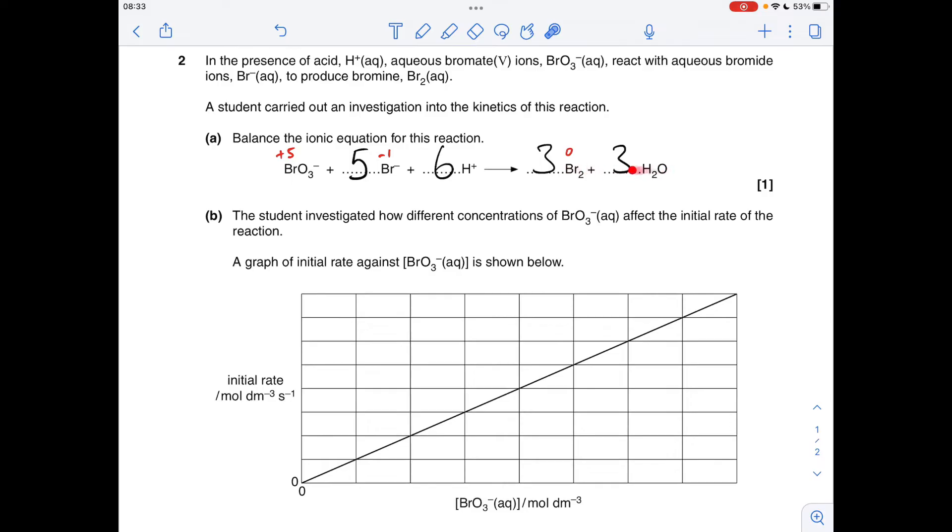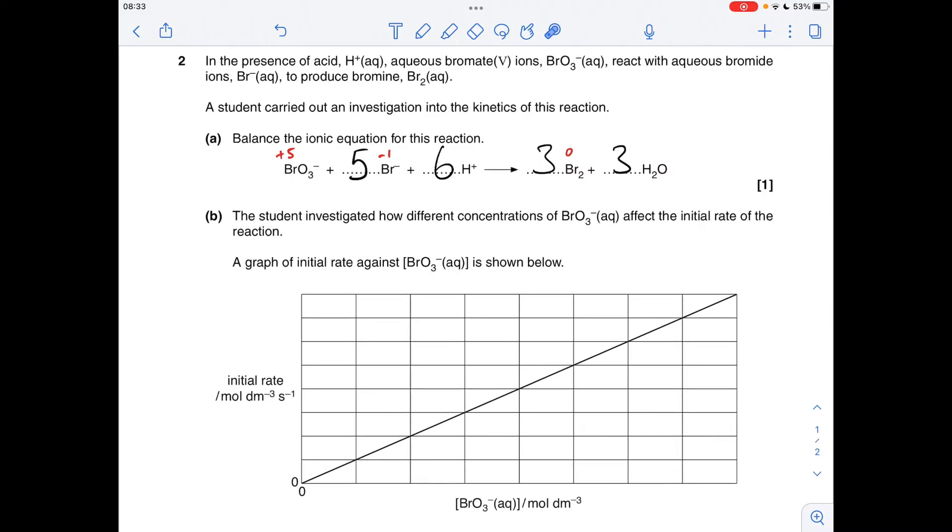So moving on to part B, we've obviously got to use all the data to get the orders of reaction for the three reactants, and then we've got to use that to work out the rate equation and then we can find the value of the rate constant k.